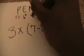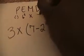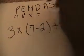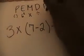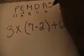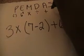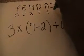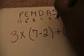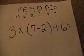M stands for multiplication. D stands for divide. A stands for addition. And last but not least, S stands for subtraction.